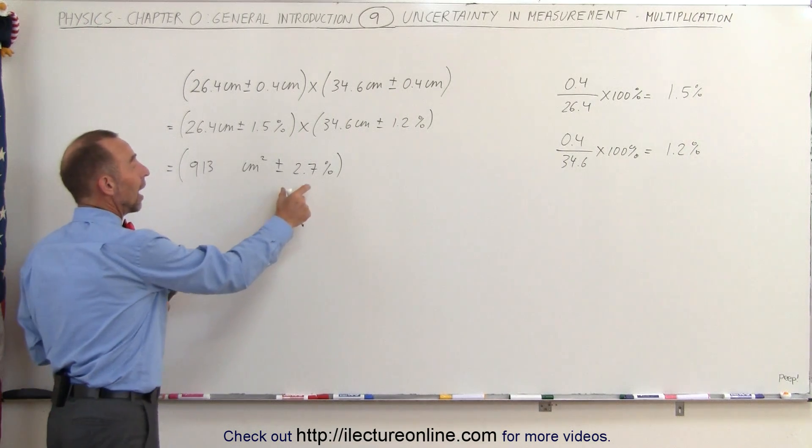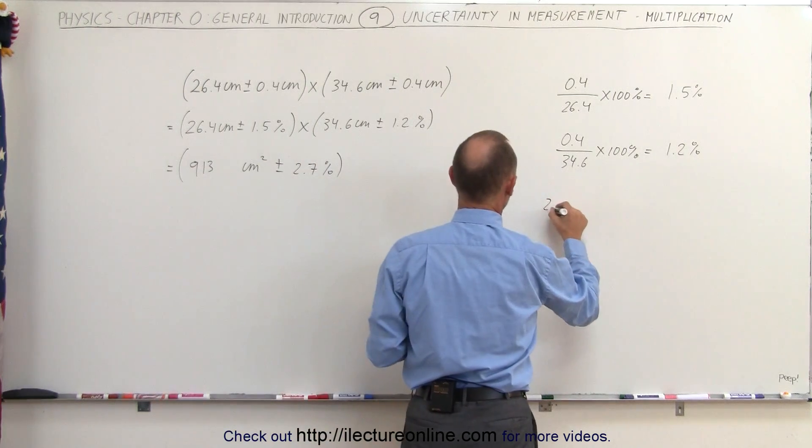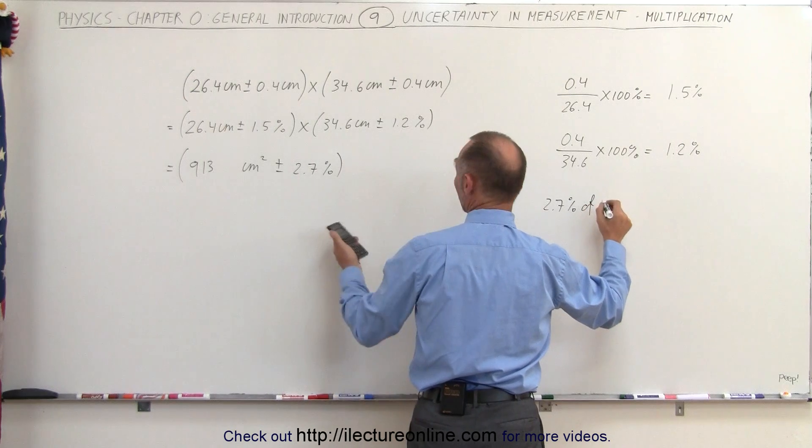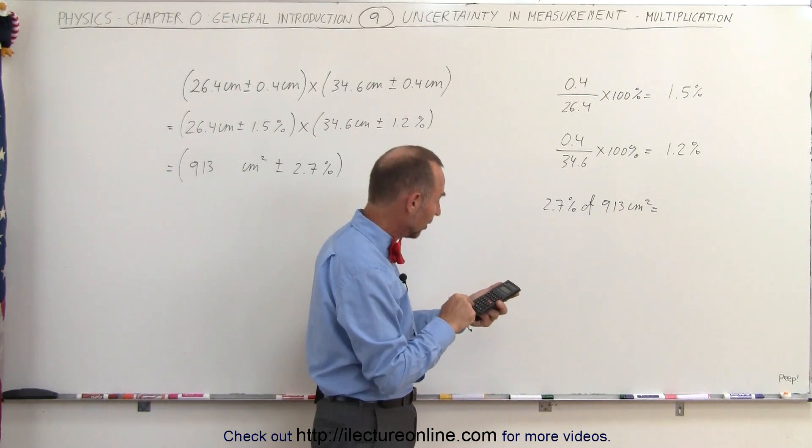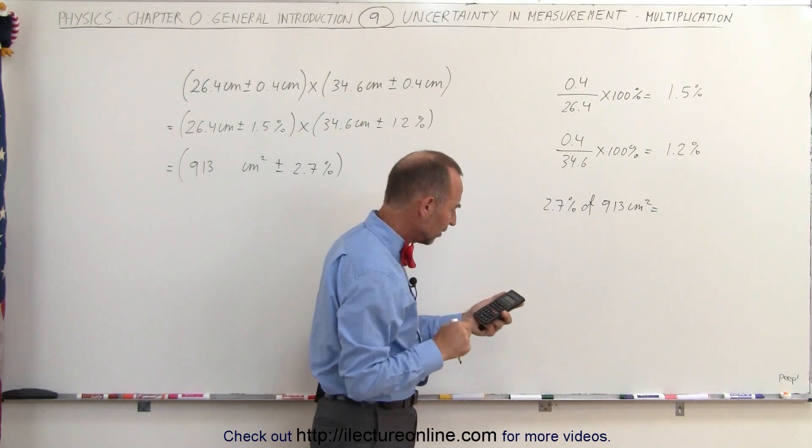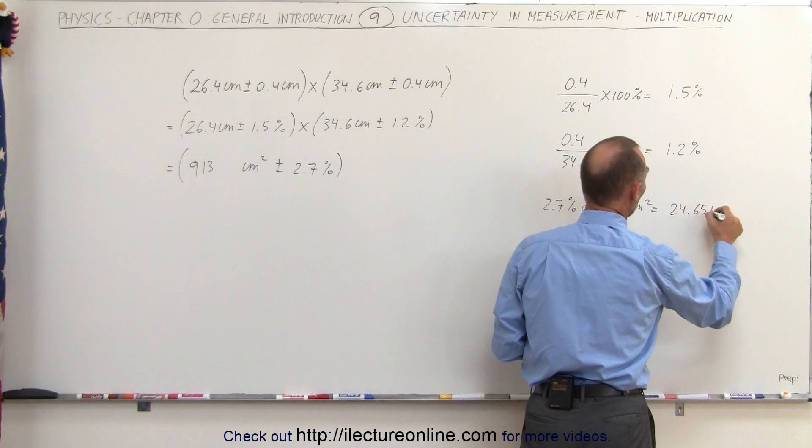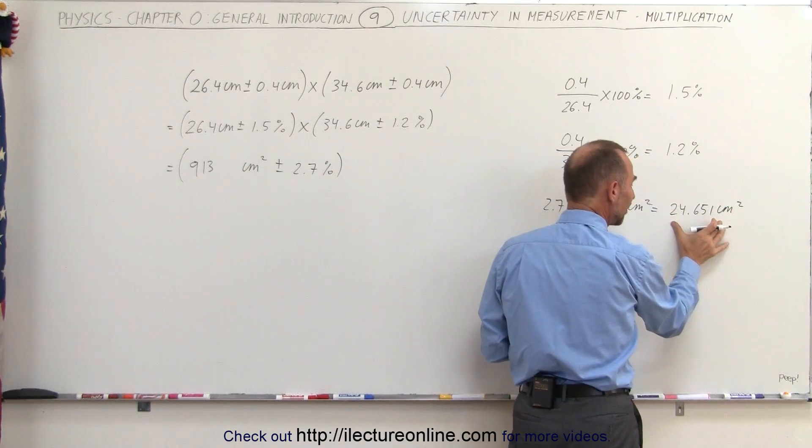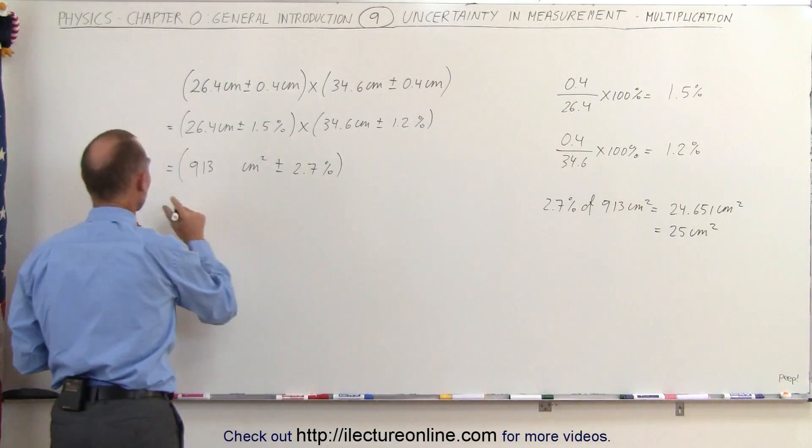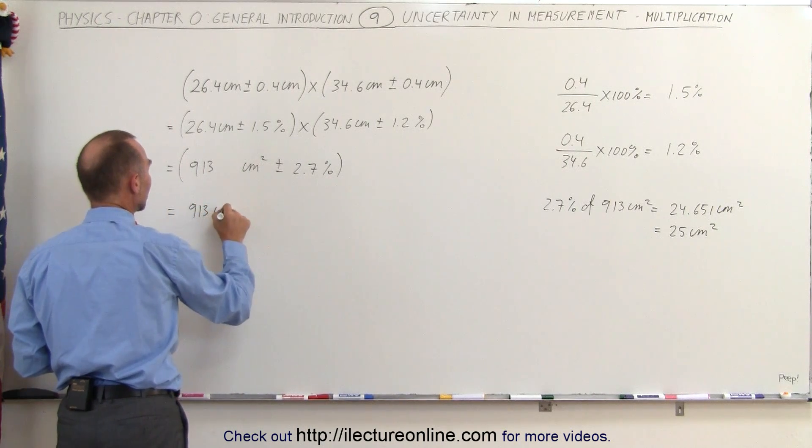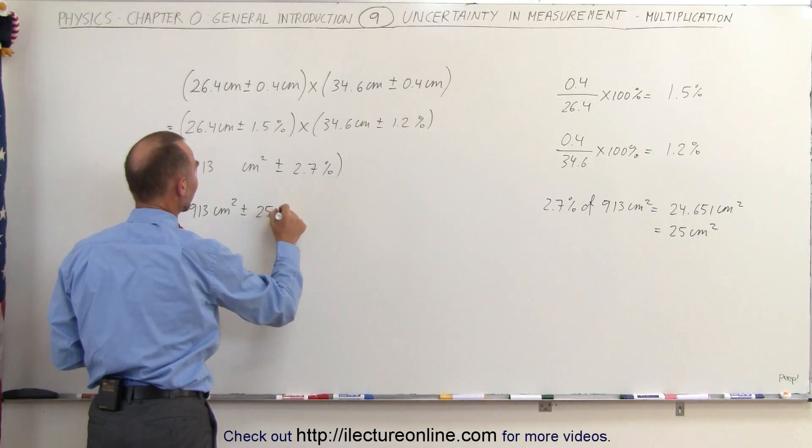The next step is to figure out how big 2.7 percent is of 913. So 2.7 percent of the final result of 913 centimeters squared equals 913 times 2.7 percent, which equals 24.651 centimeters squared. But again, way too many significant figures—simply round this off to 25 centimeters squared. Then come back over here and say this is equal to 913 centimeters squared plus or minus 25 centimeters squared, which means it could be as big as 938 or as small as 888.